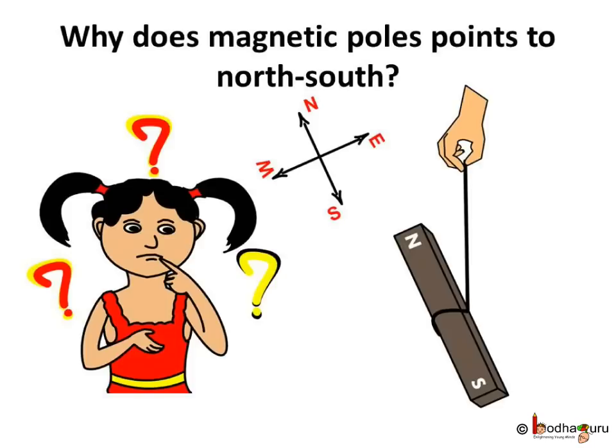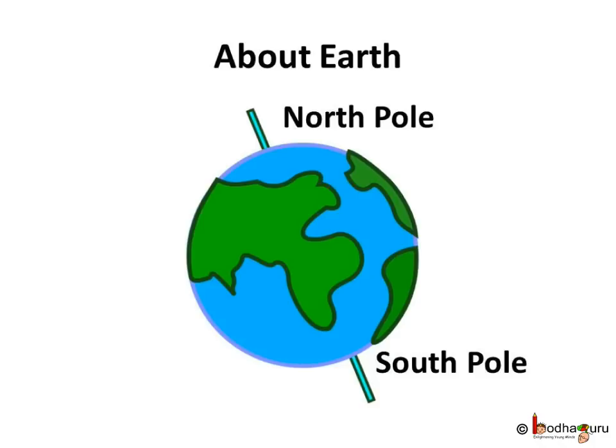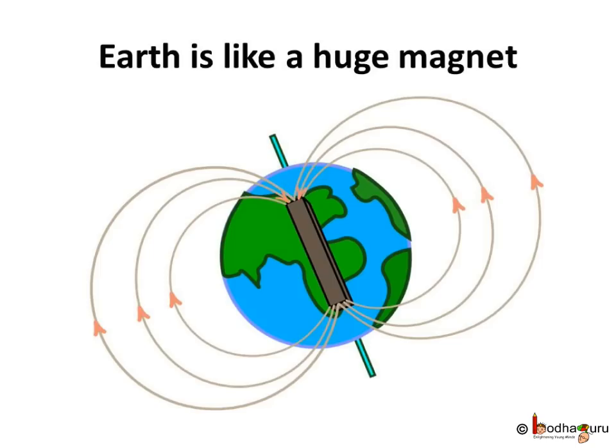But why do the magnetic poles of a freely suspended magnet always point to the North and South direction? Why not East and West? Before answering this, let us talk about Earth. You must know that the Earth rotates on its tilted axis and has a South and North Pole.